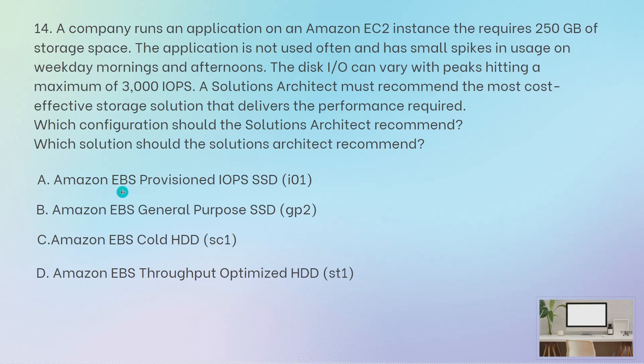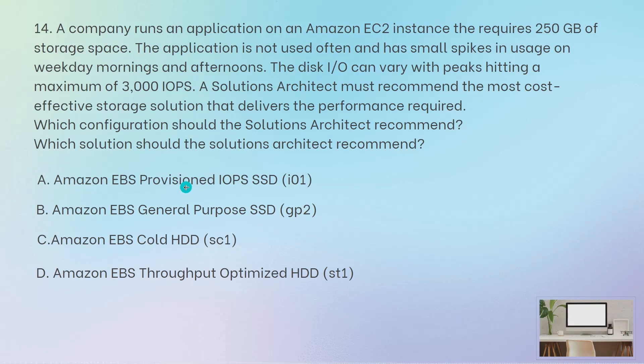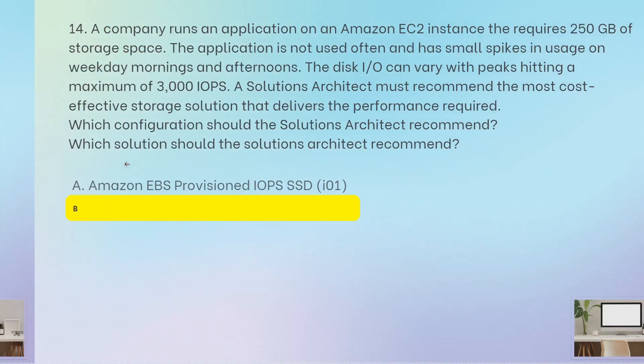Why others are not correct: Provisioned IOPS is not correct because that is IO1 volume type and it will be very expensive, and the performance levels mentioned don't seriously require that. Cold HDD is not going to perform your requirements because it cannot burst up to 3000 IOPS. EBS Throughput Optimized HDD is the same — it is not going to deliver your performance. For 3000 IOPS you need general purpose SSD or Provisioned IOPS, but Provisioned IOPS is very costly, which is why you go to general purpose SSD.